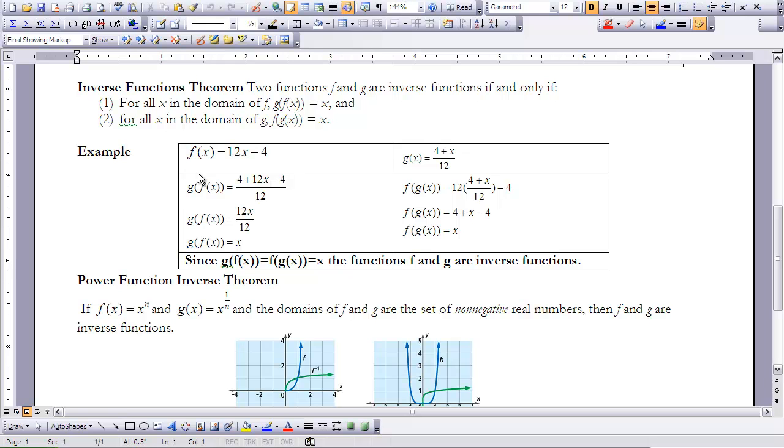So I want to explore what g(f(x)) is. So I'm going to take f(x) and put that into g(x). So this 12x - 4 is going right here. So that looks like (x + 12x - 4)/12. And if I simplify that, the 4s are going to cancel out. And I'm going to get 12x/12. So there I get x.